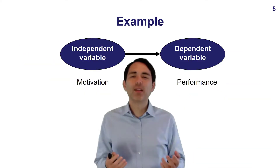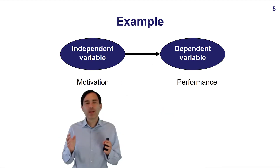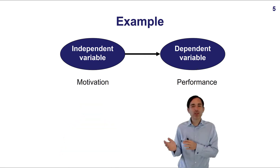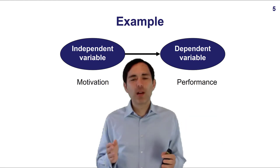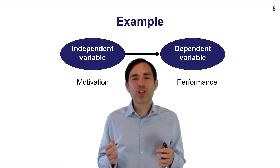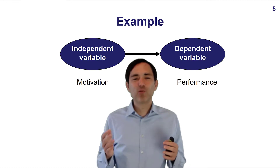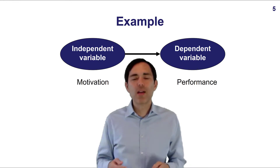To give you an example, here we have an independent variable and a dependent variable. The independent variable is motivation — say, I'm highly motivated. And the dependent variable is performance — very high job performance. If both motivation and performance are measured in the same survey, it is very likely that the relationship we measure is influenced by Common Method Bias.